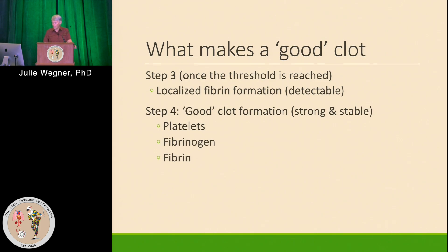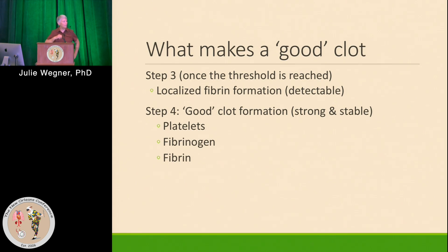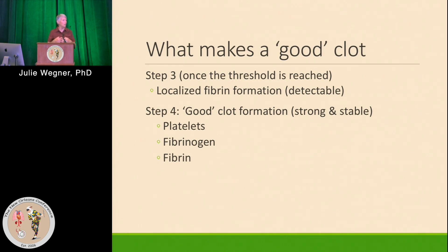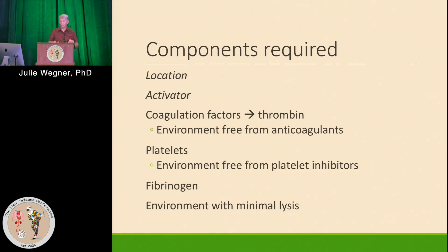Step three: once that threshold is reached, you get localized fibrin formation. That fibrin is kind of the mortar that brings together the platelets and holds the clot into place, because you need a stable clot. Step four: good clot formation is a strong and stable clot that's going to withstand the strength of blood flow. You need platelets, you need fibrinogen that holds the platelets together, and then the fibrin mesh that stabilizes it all.